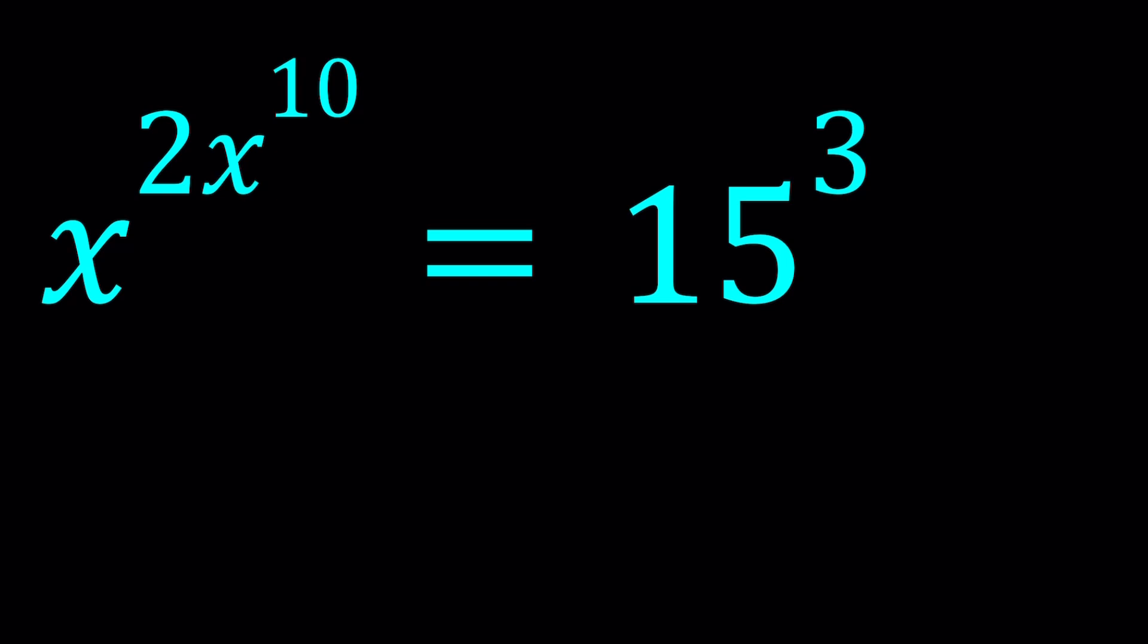So we have this problem, and I want to go ahead and take this power down. To bring that down, I do need to log both sides. In this case, natural log works well, so let's go ahead and ln both sides. Hopefully you know what I'm about to do. I'm going to bring down the powers, and that's going to allow me to use Lambert's W function.